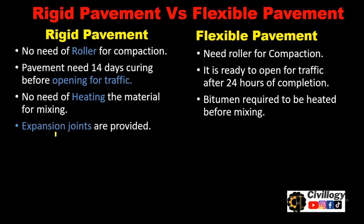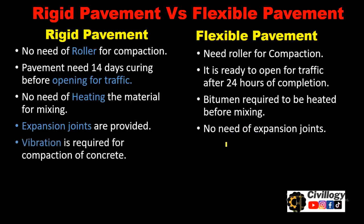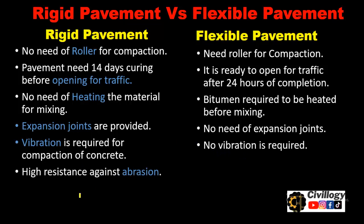In rigid pavement, expansion joints have to be provided, whereas in flexible pavement there is no need for expansion joints. Vibration is required for compaction of concrete in rigid pavement, whereas for flexible pavement no vibration is required. Rigid pavement has high resistance against abrasion, whereas flexible pavement has low resistance against abrasion.